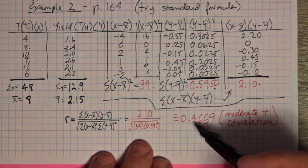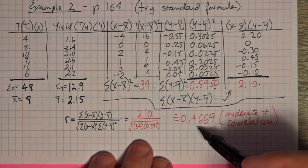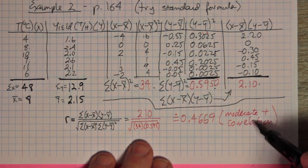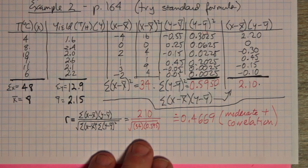Dividing the covariance by the square root of the variance on X times the square root of the variance on Y gives Pearson's R. I end up with 0.4669, which according to Pearson's R is a moderate positive correlation.